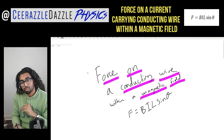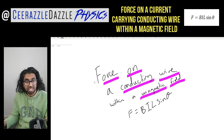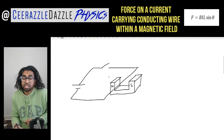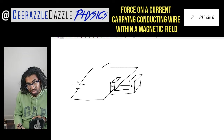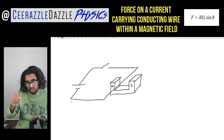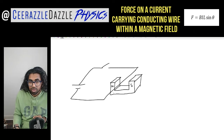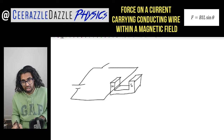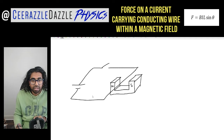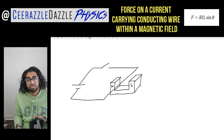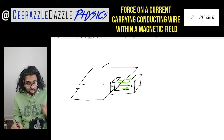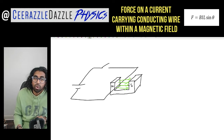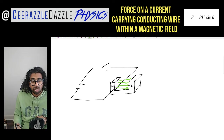First of all, let's have a quick recap about what happens when you pass current through a wire within a magnetic field. As you can see in this diagram, we have a wire with a terminal, and it goes around in a square shape placed within a magnetic field — like a curved bar magnet with a north pole here and a south pole here. The magnetic field goes out of the north and into the south, so it's going from left to right in this case.